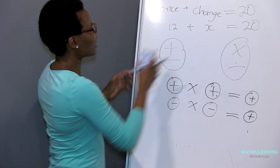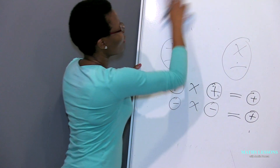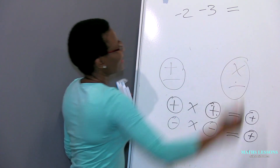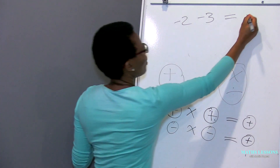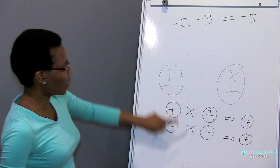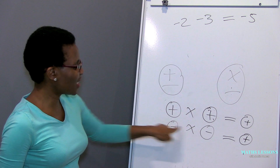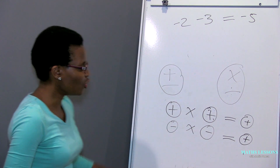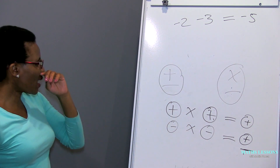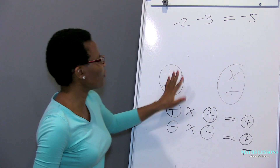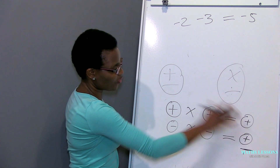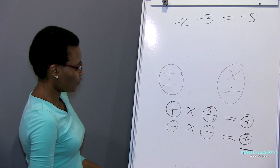Remember in addition when the signs were both negative, we said you add and take the sign along, so you'd get minus five. What most of you do is apply that rule here in multiplication — because the signs are both negative, you take that along and make the answer negative. That's where you are getting it wrong. Treat the rules for addition and subtraction differently from the rules for multiplication and division.